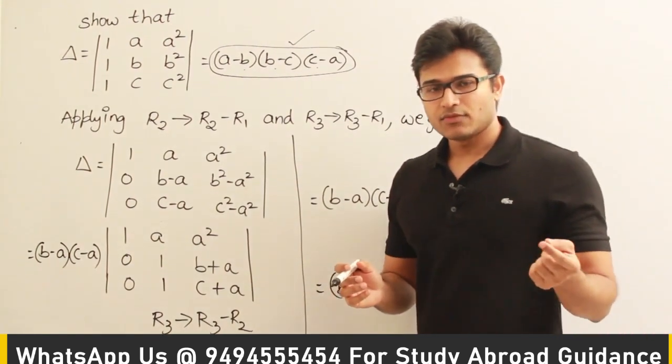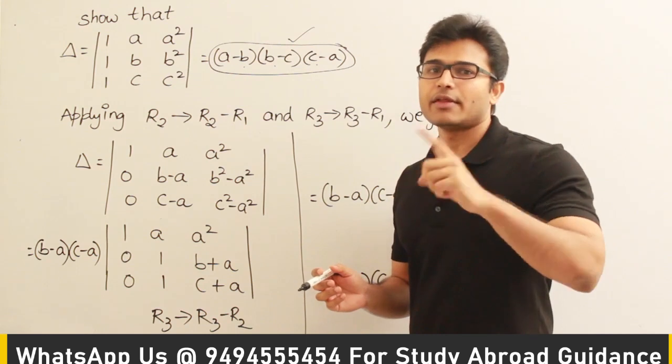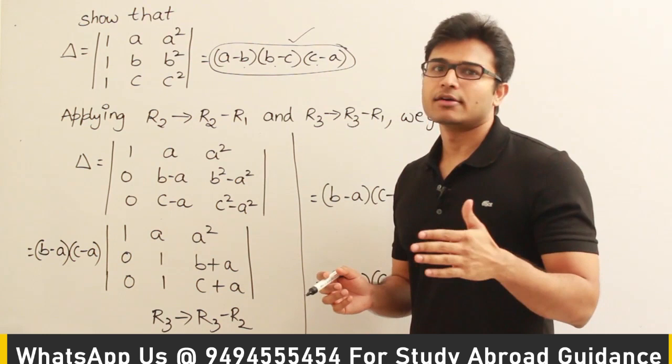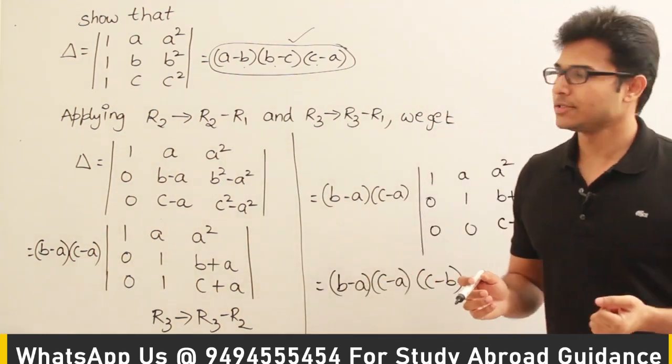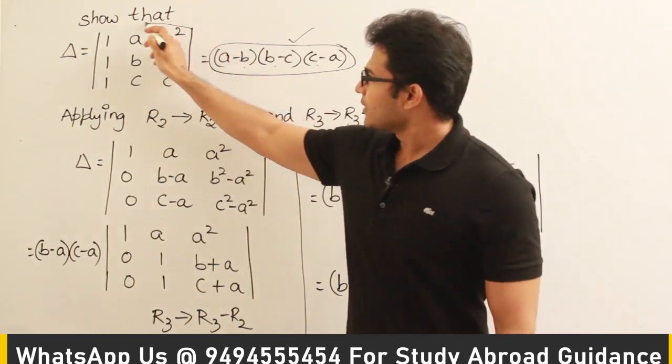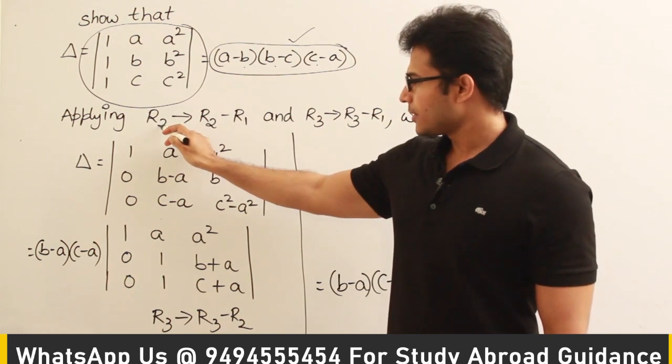So whenever you see something like this, see that they have applied some operations to the rows or columns. And I've already told you that when we take a row or a column and we add it with the other row or a column multiplied with a constant, the resulting value of the determinant doesn't change.